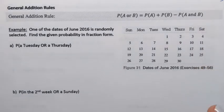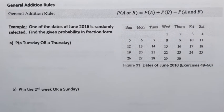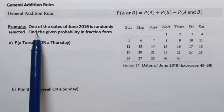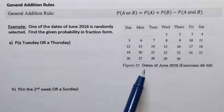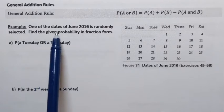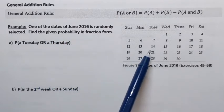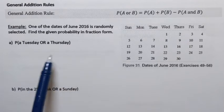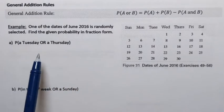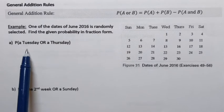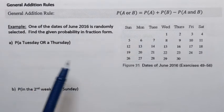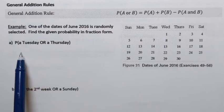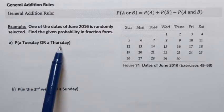Let's look at an example to make a bit more sense out of this. We have a calendar, and it says that one of the dates of June 2016 is randomly selected. Find the given probability. The first probability we need to find is that the randomly selected date from June 2016 is either Tuesday or Thursday.